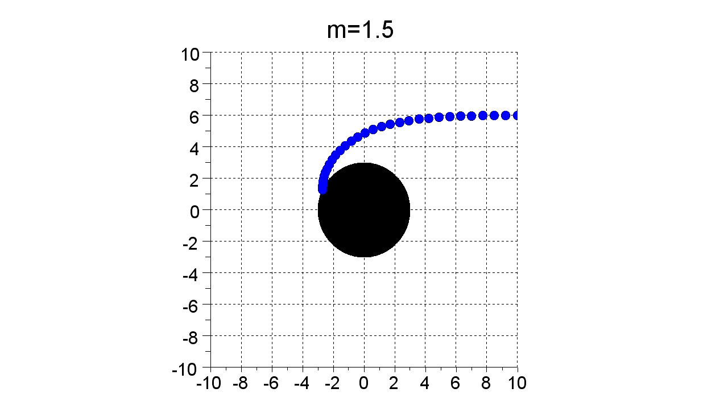Now imagine running the simulation in reverse. In that case, the light pulse would start off frozen and never move. No light, in fact nothing, can move outward from the black hole horizon.